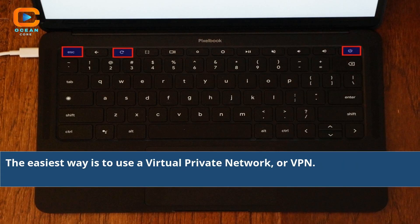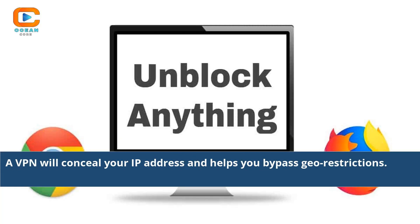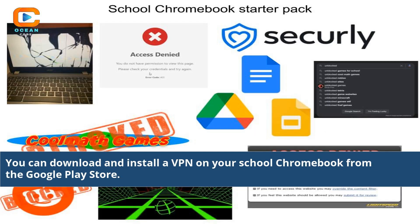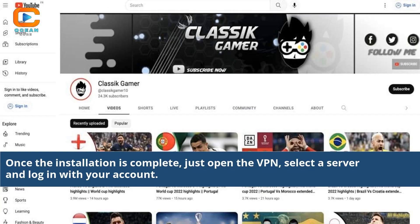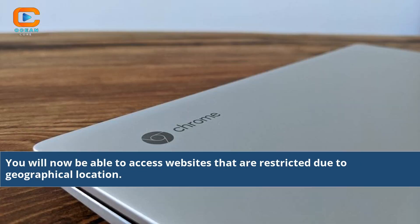The easiest way is to use a virtual private network, or VPN. A VPN will conceal your IP address and helps you bypass geo-restrictions. You can download and install a VPN on your school Chromebook from the Google Play Store. Once the installation is complete, just open the VPN, select a server and login with your account. You will now be able to access websites that are restricted due to geographical location.